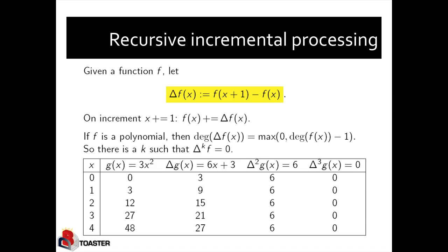Given such a function f, we define delta f of x to be f of x plus 1 minus f of x — the change of f of x as we increment x by 1. This is a very special case of our general incremental view maintenance idea; we are only talking about the case that we actually increment x by exactly 1.